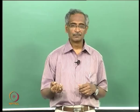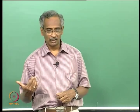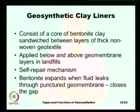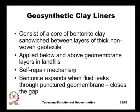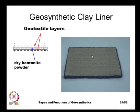Once the bentonite clay comes in contact with water, it swells and expands. This expansion closes any opening caused by damage to the geomembrane — this is called the self-repair mechanism. Schematically, the GCL has a core of dry bentonite powder sandwiched between two thick geotextile layers.